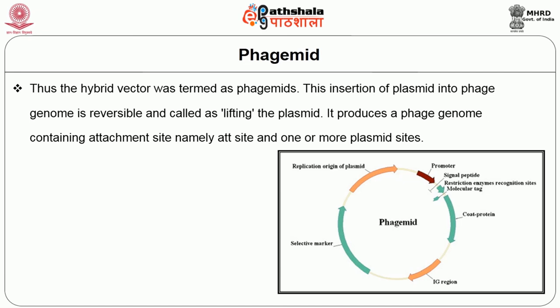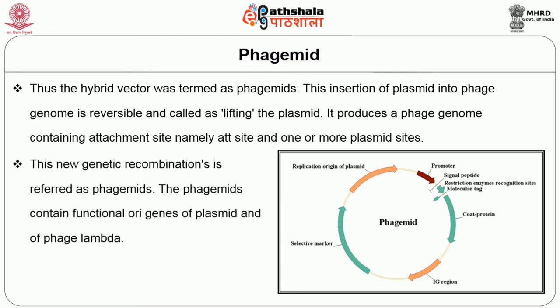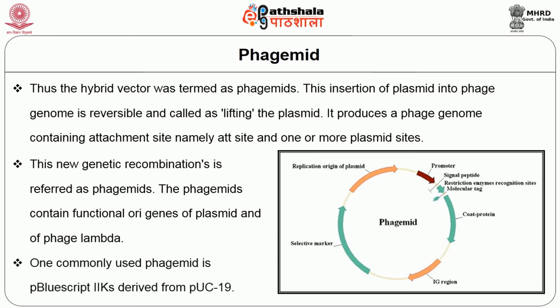The insertion of a plasmid into the phage genome is reversible and is called lifting the plasmid. It produces a phage genome containing an attachment site (ATT) and one or more plasmid sites. This new genetic recombination is referred to as phagemids. Phagemids contain functional ORI genes of both plasmid and phage lambda. One commonly used phagemid is P-bluescript II KS, derived from PUC19.